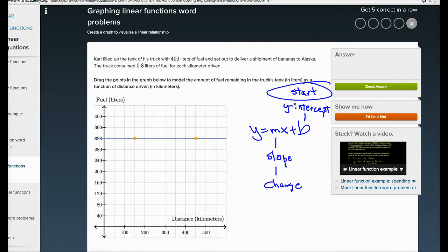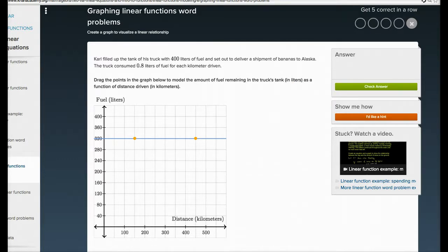So this question says, Carl filled up the tank of a truck with 400 liters of fuel and set out to deliver a shipment of bananas to Alaska. So what they want me to do is figure out, well, how does this all relate into this picture here? Well, first off, it says he filled it up with 400 liters of fuel and set out to deliver. So in the very beginning, his starting point, my y-intercept is 400 liters. So I'm going to take my starting point and go up to 400 liters.